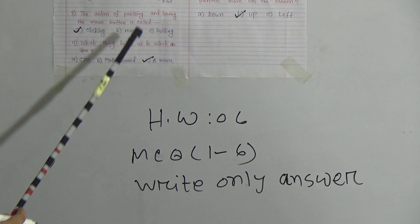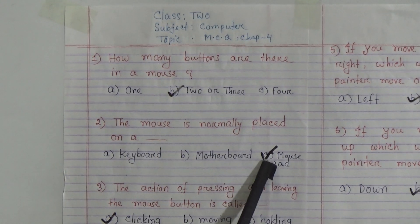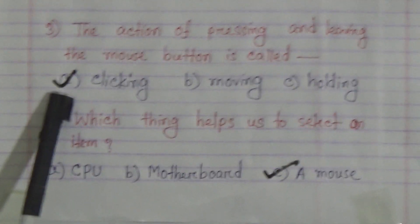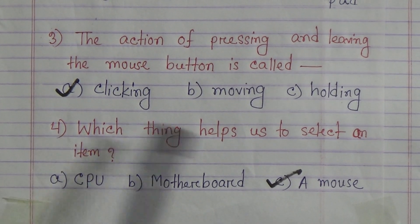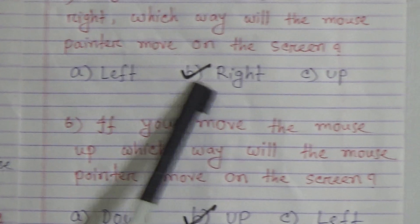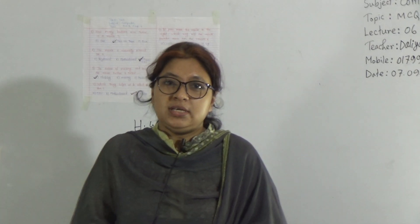Don't copy the questions, write only the answers. Question 1: Option B - Two or Three. Question 2: Option C - Mouse pad. Question 3: Option A - Clicking. Question 4: Option C - Mouse. Question 5: Option B - Right. Question 6: Option B - Up. So dear learners, I hope you understood today's topic. See you next class. Allah Hafiz.